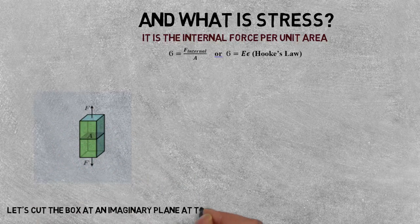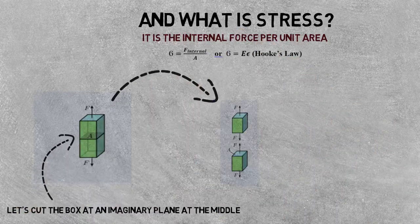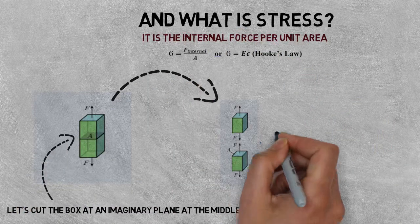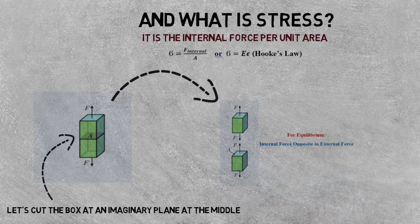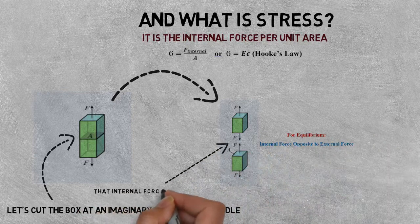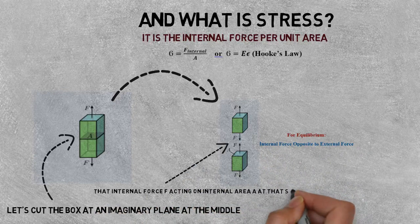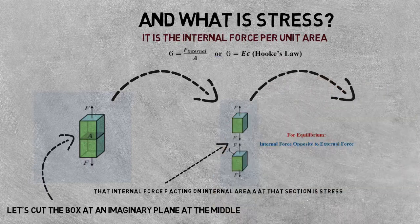Cutting the box creates two portions. In order to keep each portion at equilibrium, there must be an internal force opposite to the external force. That internal force F acting on the internal area A at that section defines stress. Therefore, stress is an internal phenomenon because it is caused by the internal force F at that section.